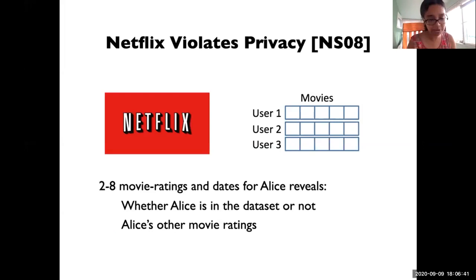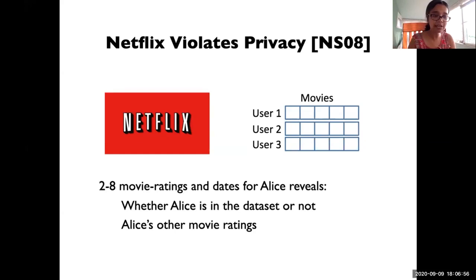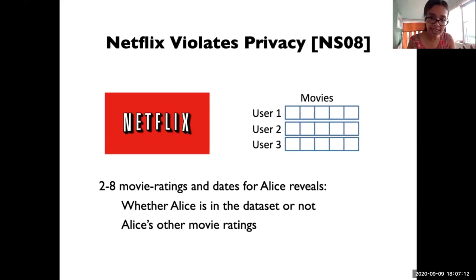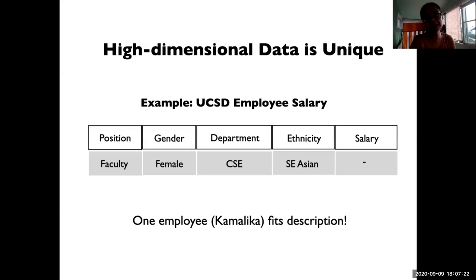Then again, in the Netflix competition, Netflix released a lot of data about a bunch of movies, users, and how users had rated certain movies. Researchers found that if you only had two to eight movie ratings and approximate dates for Alice, you could figure out whether Alice was in the dataset or not, and determine her other movie ratings. For example, if Alice writes a blog where she occasionally talks about movies she watches, and she happened to be in the Netflix dataset, you would be able to find her out. People tend to be very unique, especially if you have high-dimensional data about them.